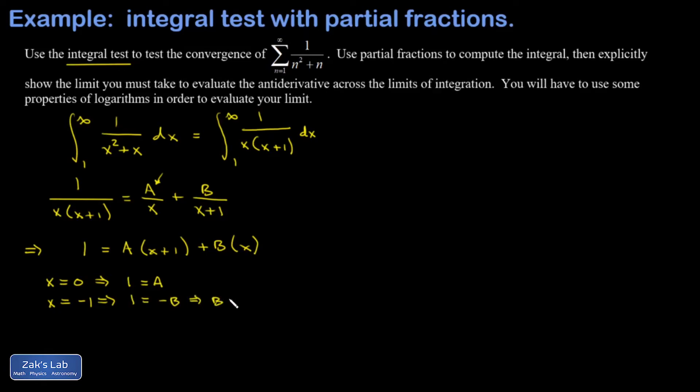Which means B is negative one. Now I can rewrite my integral with this fraction split into pieces. I found that A was one, so I have a one over x. B was negative one, so I have minus one over x plus one dx.